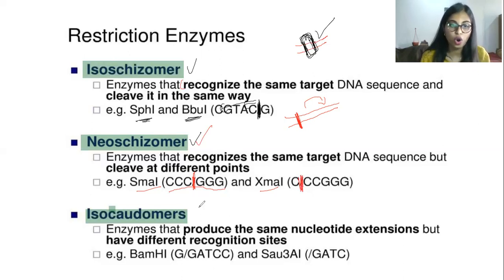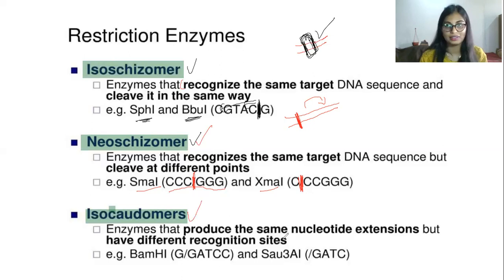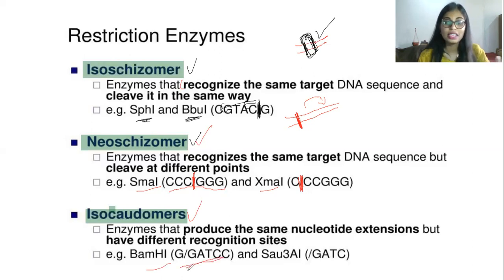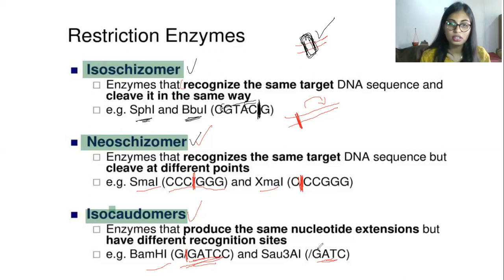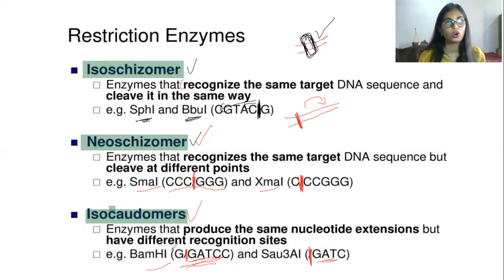Isocaudomers are enzymes that produce the same nucleotide extension but have different recognition sites. That is what is called isocaudomers.